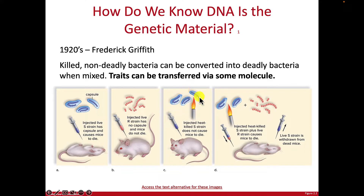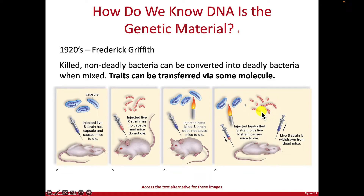Griffith then took the lethal S bacteria, killed them with heat, and injected that into the mice — and they didn't die. That's not surprising because you kill the bacteria, it no longer kills the mouse. Then came the critical experiment: he took the dead S bacteria and the live but non-lethal R bacteria. Both of these on their own don't kill the mouse, but when he put them together, they did kill the mouse.